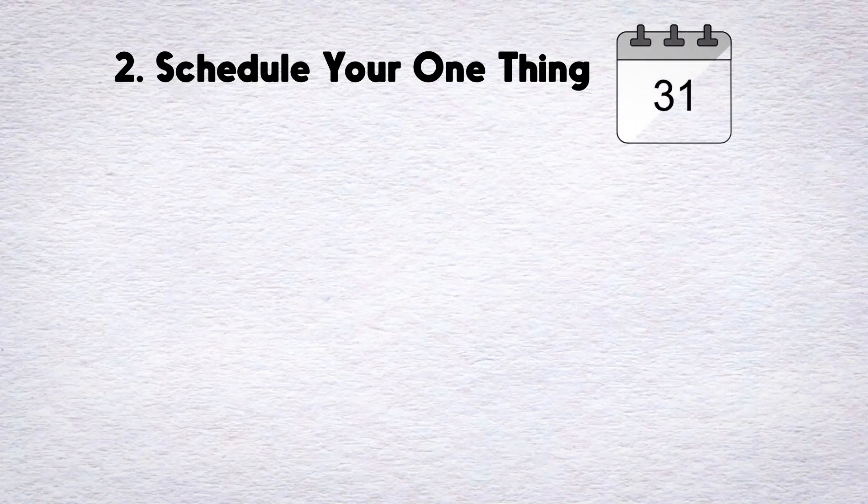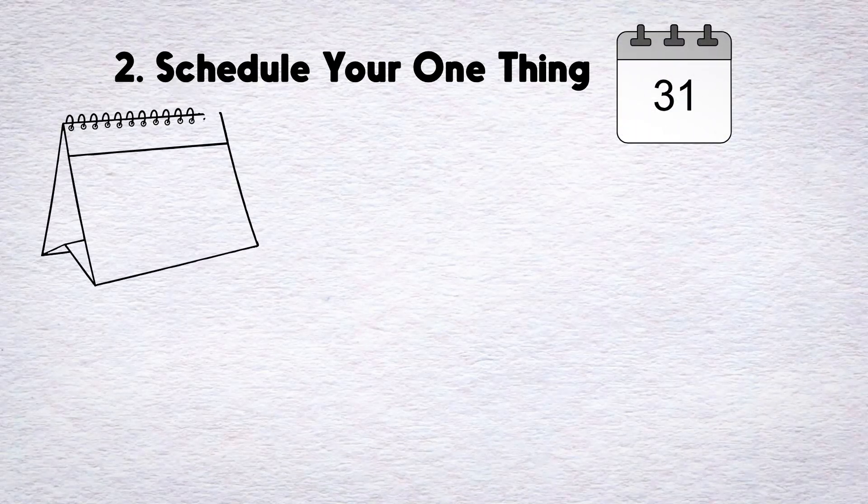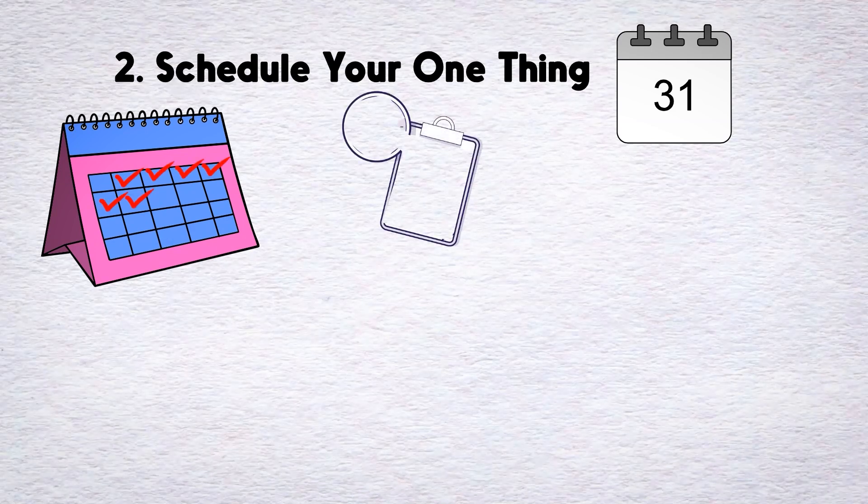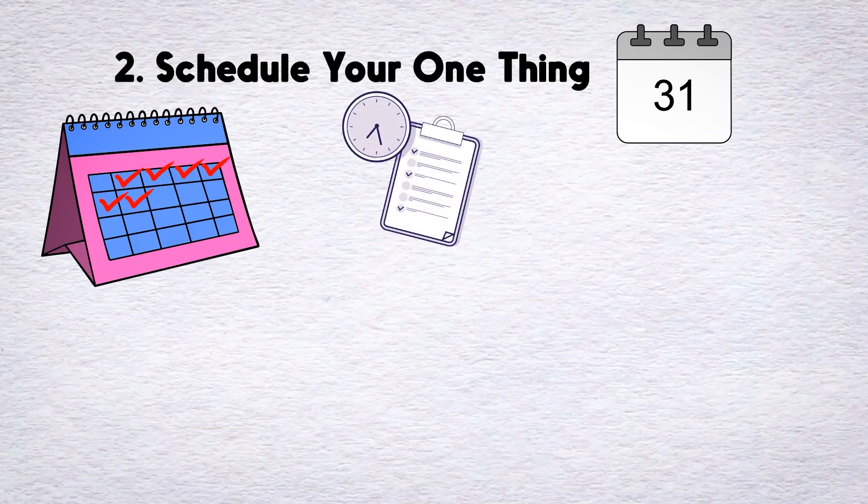Number 2. Schedule your one thing. The simplest way to succeed with your one thing is to turn it into a habit that you repeat daily. So that's why I recommend adding it to the end of your morning routine or as the first task when starting your workday.